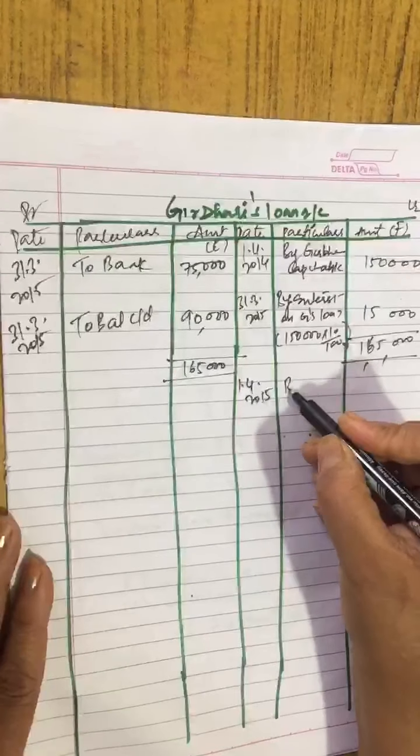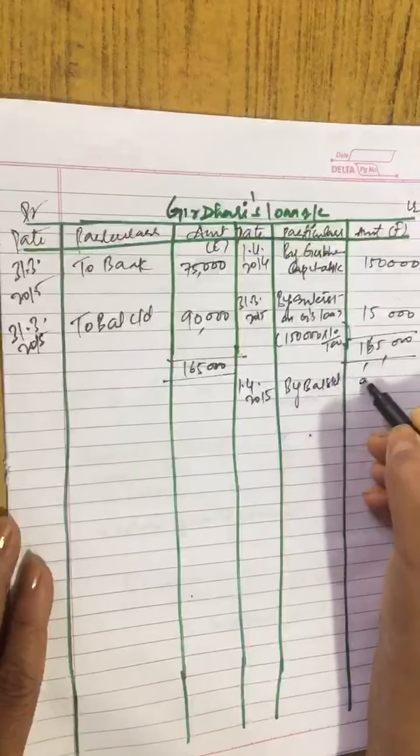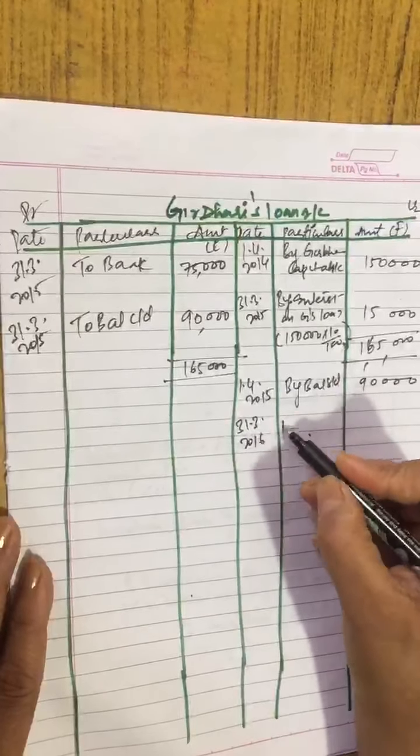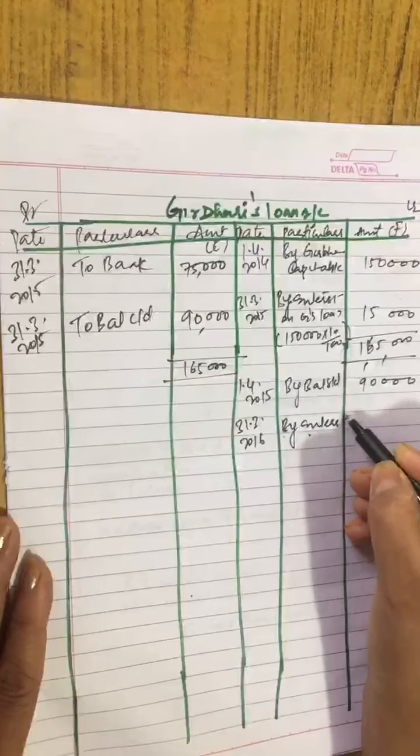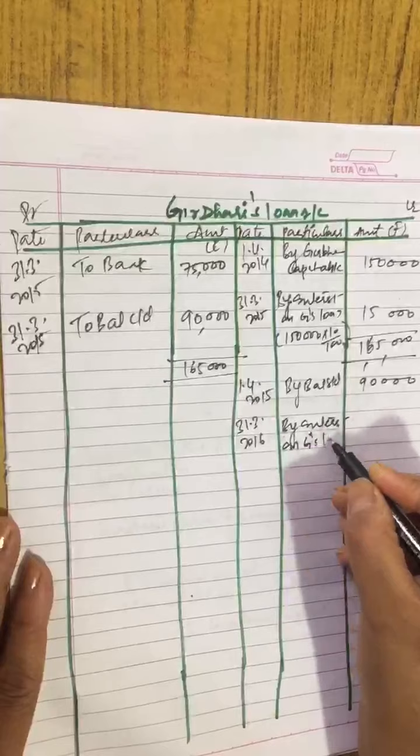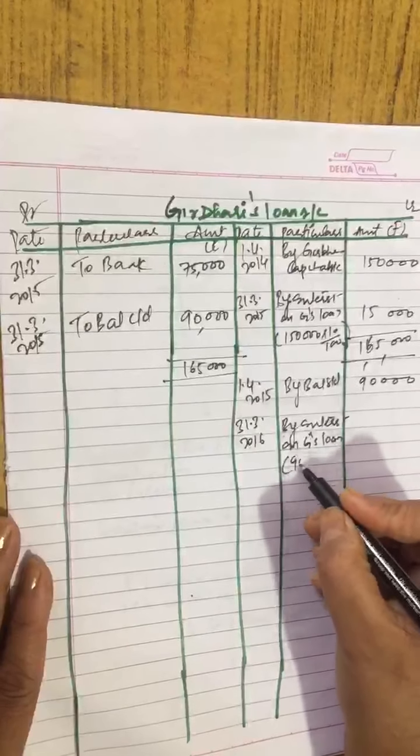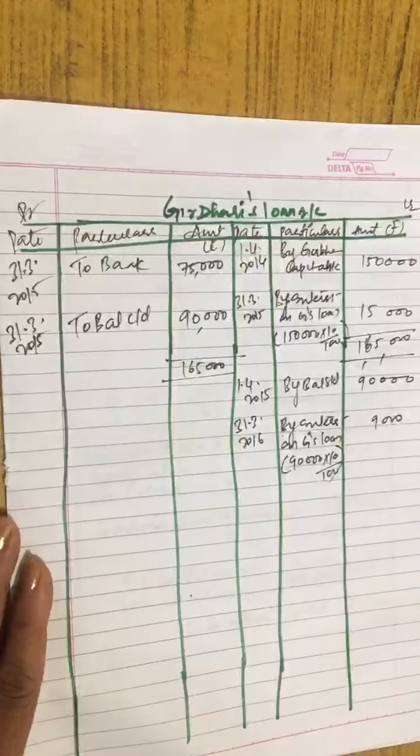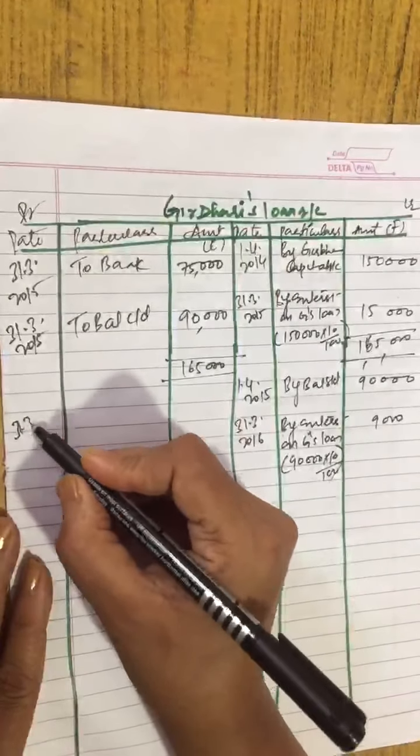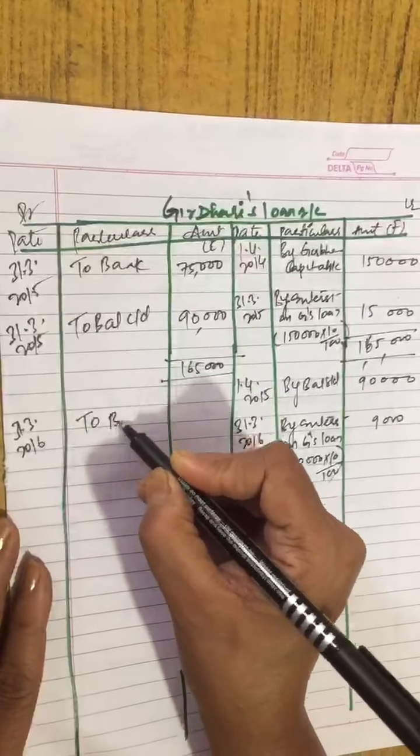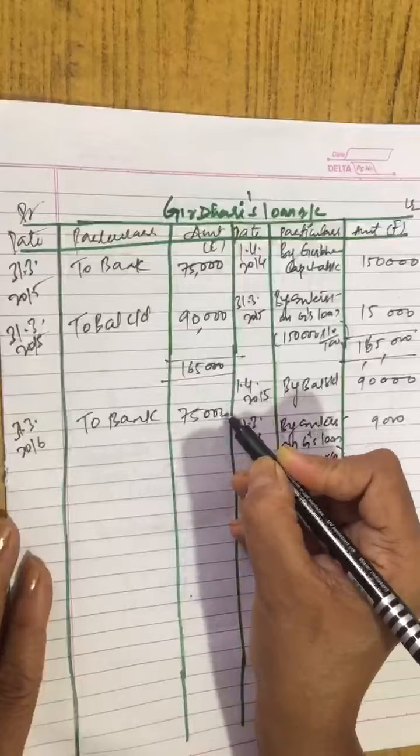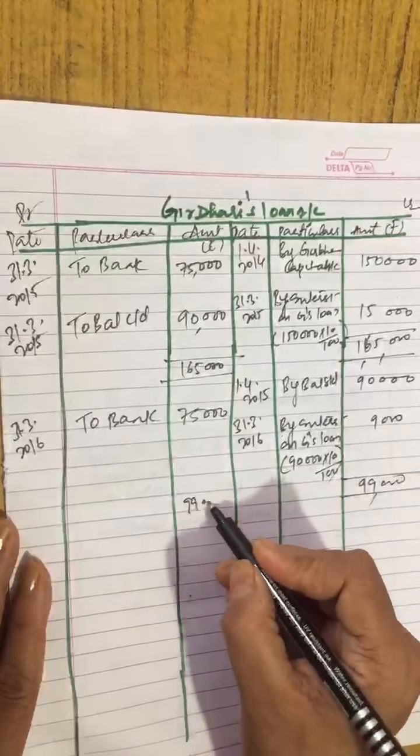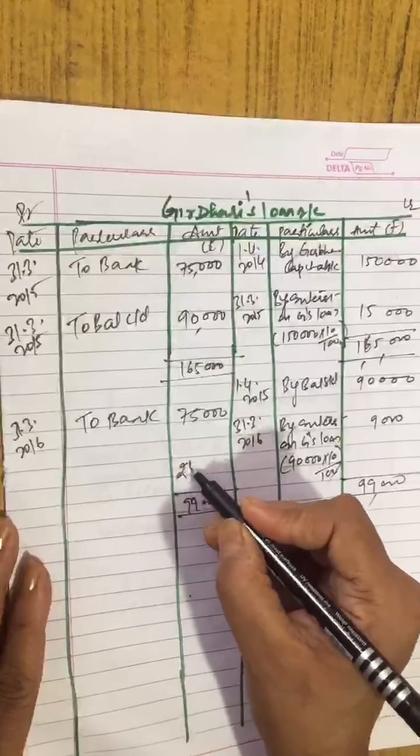So 1,65,000 minus 75 if you do, balance comes to 90,000. So balance carried down on 31st March 2015. Now you bring it down: 1st April 2015 balance brought down 90,000. Again one year will complete on 31st March 2016. Then interest on Girdhari's loan you will give: 90,000 ka 10% if you calculate, this becomes 9,000. But you have to pay only 75,000 which already includes interest.